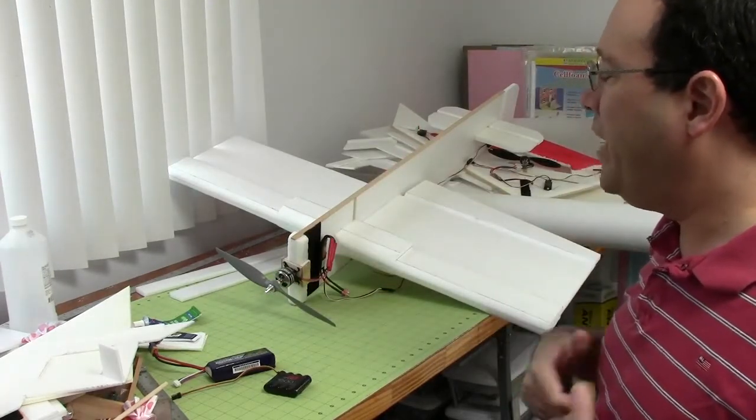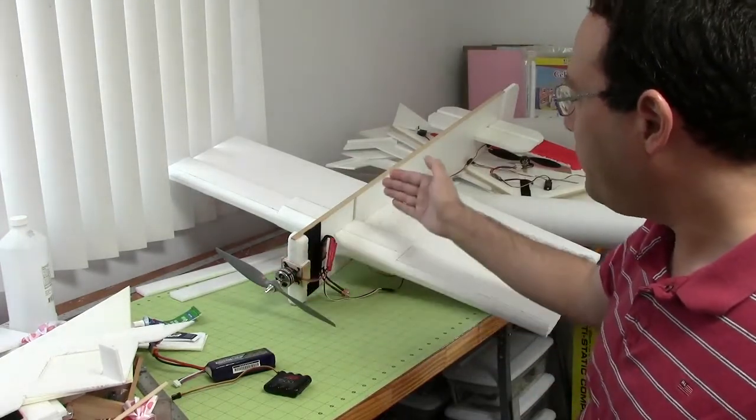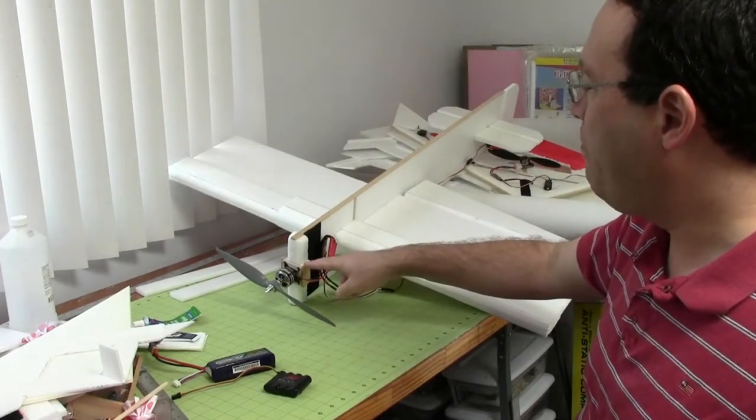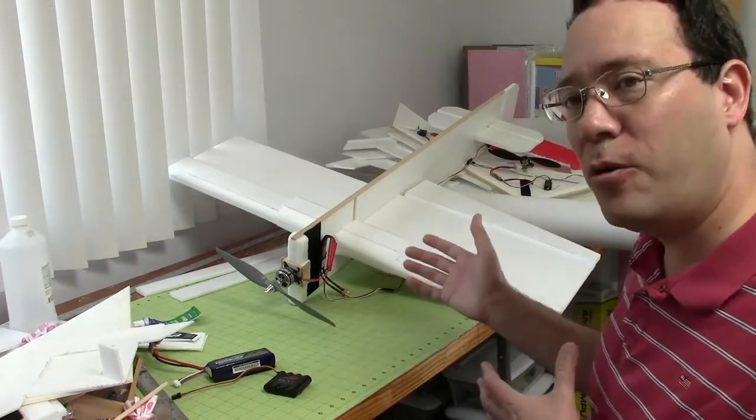So I think what I did in the spreadsheet is that I did the computations from there, but then to figure out where the wing needed to go, I actually measured from the firewall to the wing leading edge, which I thought was a lot easier to work with.